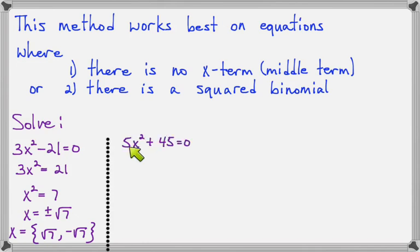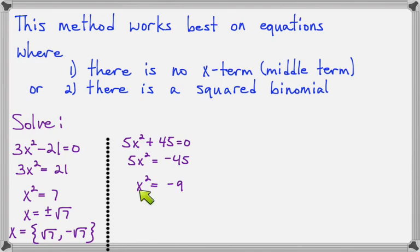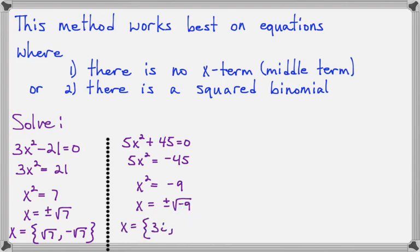Next: 5x squared plus 45 equals 0. Again, no x term, so the square root property is a good method. I isolate x squared by subtracting 45 from both sides and dividing both sides by 5, giving x squared equals negative 9. Taking the square root of both sides, the square root of x squared is x, and the square root of negative 9, with the plus/minus, needs to be simplified. The square root of 9 is 3 and the square root of negative 1 is i, so I have two answers: positive 3i and negative 3i.